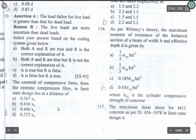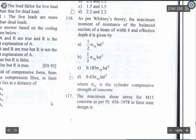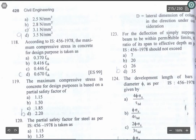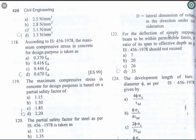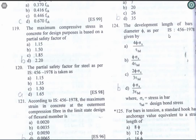Question 117: The maximum shear stress for M15 concrete as per IS456-1978 in limit state design is 2.5 N/mm². Option A is the correct answer. Question 118: According to IS456, the maximum compressive stress in concrete for design purposes is 0.446 fck. Option C is the correct answer. Question 119: The maximum compressive stress in concrete for design purposes is based on a partial factor of safety of 1.5. Option B is the correct answer. For concrete the partial factor of safety is 1.5 and for steel it is 1.15.